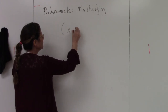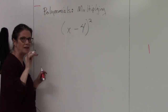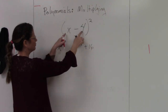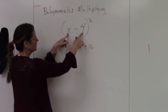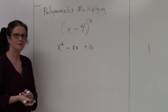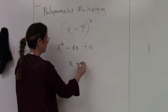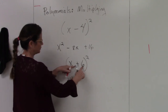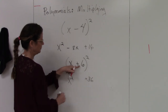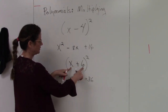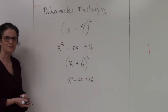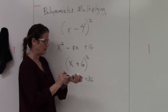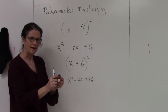Let me show you the shortcut. For x minus 4 squared: square the first to get x squared, square the last to get 16, then multiply negative 4 times x to get negative 4x and double it for negative 8x. So the answer is x squared minus 8x plus 16. One more example: square the first, square the last — that's positive — then multiply 6 times x to get 6x doubled, giving 12x. If you don't trust me, multiply out x plus 6 times x plus 6, or x minus 4 times x minus 4, and you'll get these answers every time. That's multiplying polynomials.